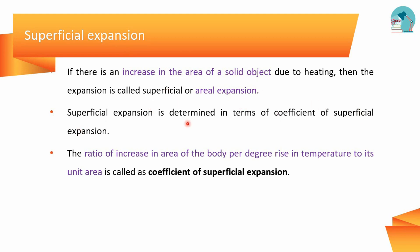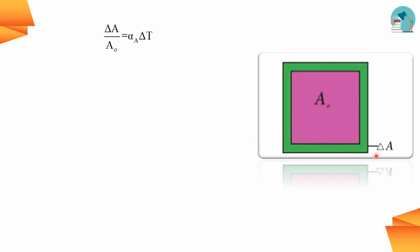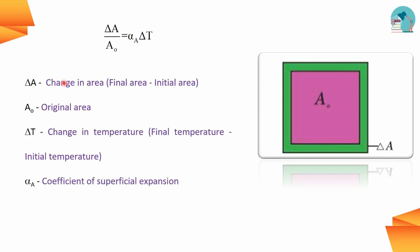The coefficient of superficial expansion is determined by the ratio of increase in area per degree rise in temperature towards unit area. That is the coefficient of superficial expansion. The SI unit is per Kelvin. A0 is the original area. Delta A is the increase in area. Alpha A is the coefficient. Change in area is final area minus initial area. Change in temperature is final temperature minus initial temperature.